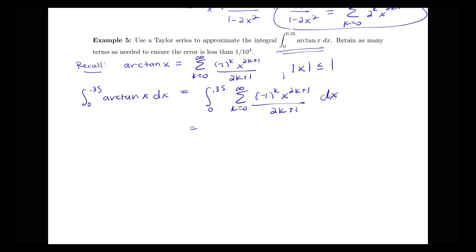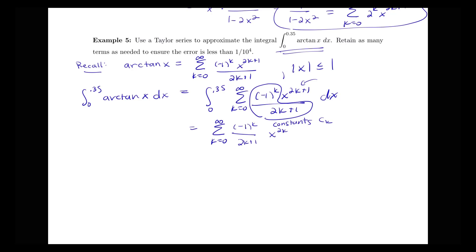We can take the antiderivative: the integral of our sum is the sum of the antiderivatives of each term. The factors without x, namely negative 1 to the k over 2k plus 1, are treated as constants, so they stay the same. We apply the antiderivative power rule to x to the 2k plus 1, giving x to the 2k plus 2, all over 2k plus 2. This is a definite integral, so we evaluate from 0 to 0.35.